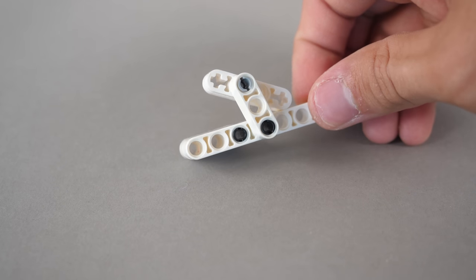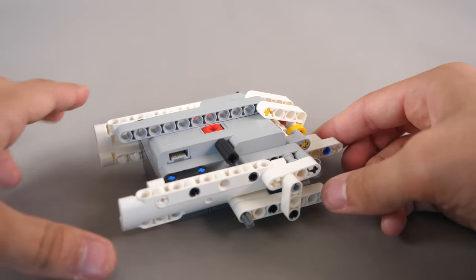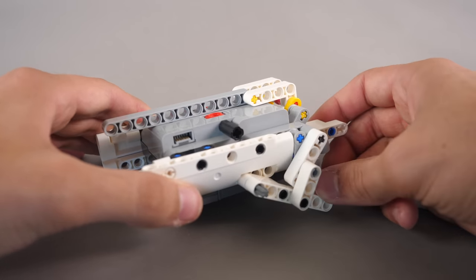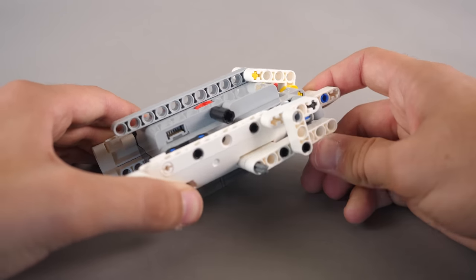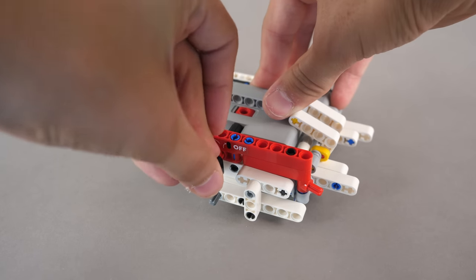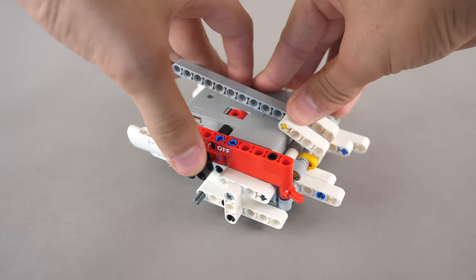This shrimpy little component is built up and secured onto the side of the battery box. Now, some parts of the landing gear mechanism are coming together. Next, a few beams are added, and we slide in the switch, which will turn on the battery box.